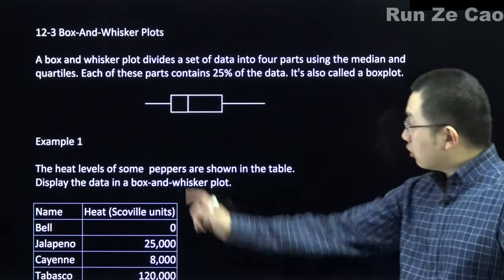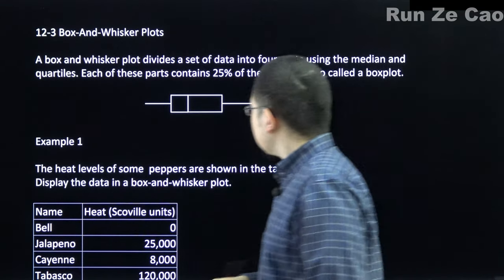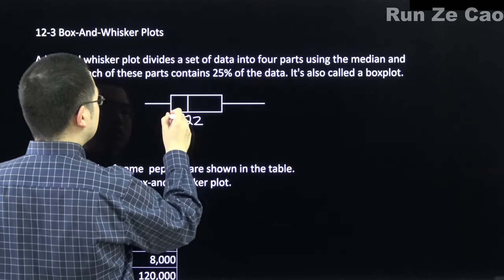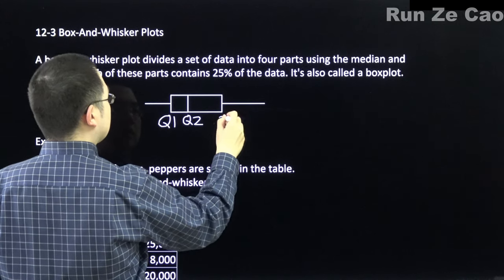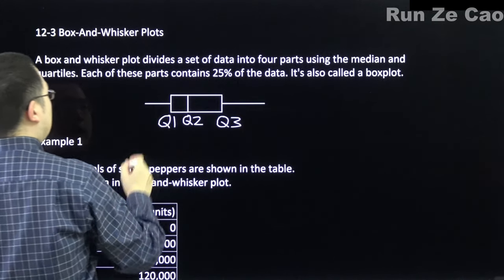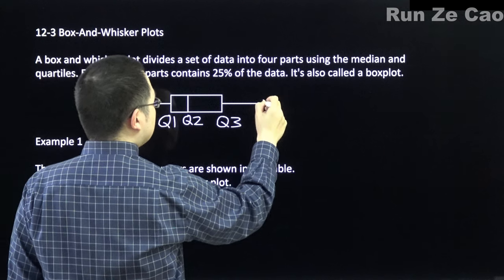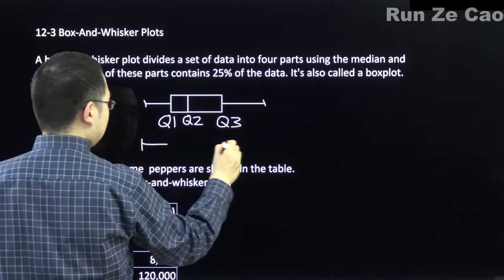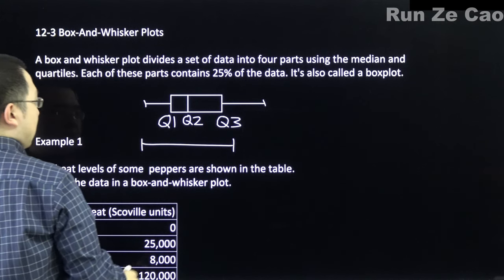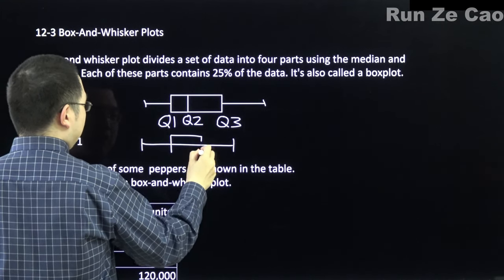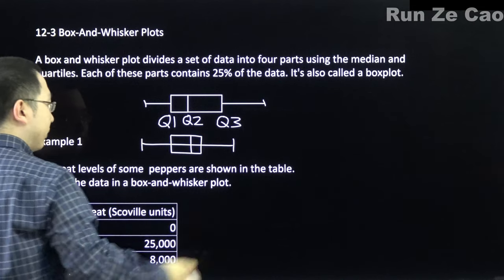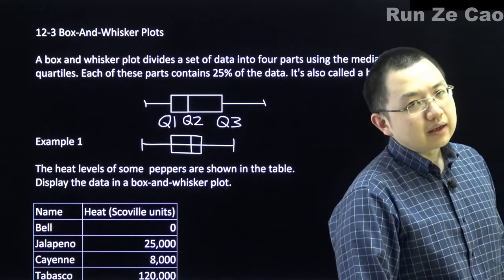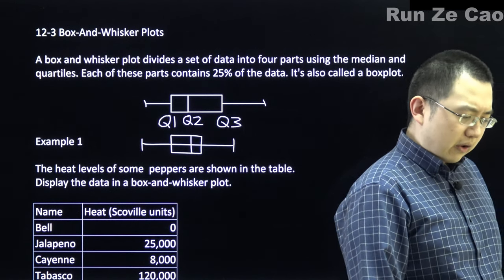Let's talk about box and whisker plots, also known as box plots. Each of the four sections contains 25% of the data. Q2 is the median line inside the box, Q1 is the left edge of the box, Q3 is the right edge, and the whiskers extend to the minimum and maximum values. Sometimes you see range ticks on the ends. The box shows your interquartile range, including your second quartile — the median.